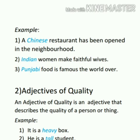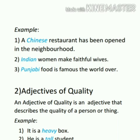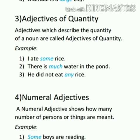The second type is adjectives of quality. An adjective of quality describes the quality of a person or thing — it may be the color, size, shape, or age. Whenever an adjective gives information about the quality of a noun, it is an adjective of quality. For example: it is a heavy box; he is a tall student; Mumbai is a large city. In these examples, heavy, tall, and large describe the quality of the noun.